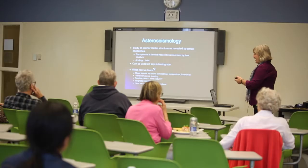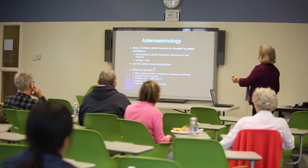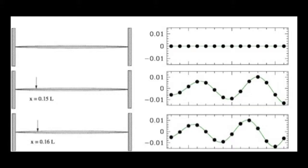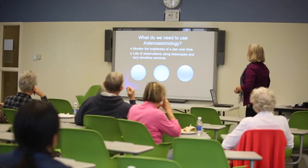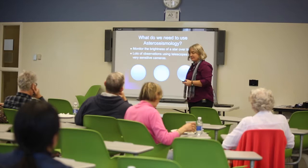Astroseismology is studying the interior structure of a star as revealed by its global oscillations. If you observe stars long enough to determine the frequencies that they're pulsating at, then you can get a better picture of what's going on inside the star. What we need for that is a bunch of telescopes, a lot of observations, and a lot of fancy cameras.